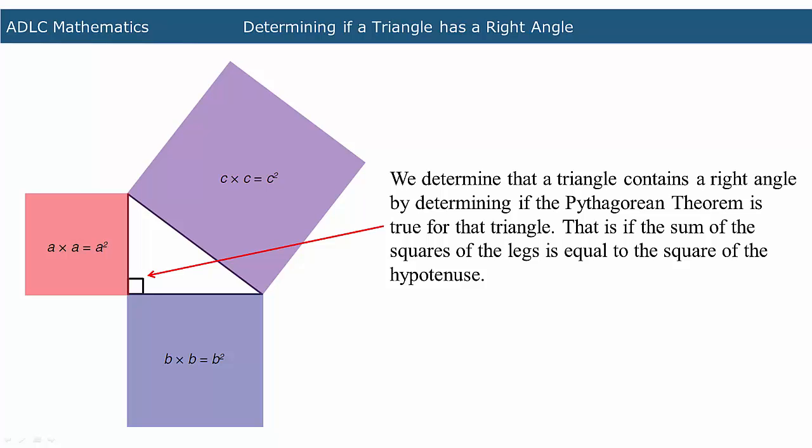We determine that a triangle contains a right angle by determining if the Pythagorean theorem is true for that triangle. That is, if the sum of the squares of the legs is equal to the square of the hypotenuse. In this video, we will be determining if a triangle has a right angle.